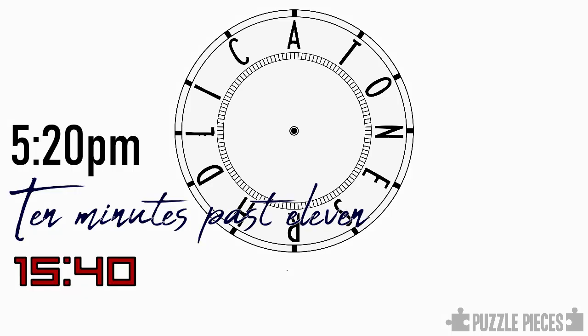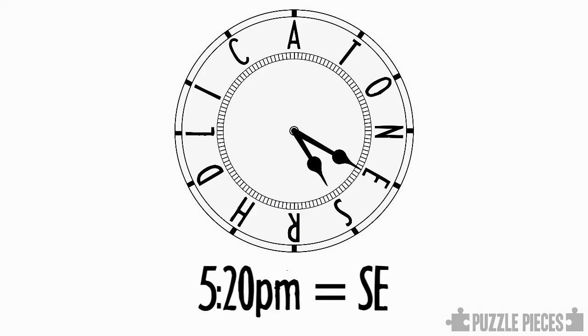Now suppose that you were given some different times to look up on this clock. You can make this puzzle more interesting by expressing those times in different formats. So the first time here is 5:20 p.m. When we set the hour hand to 5 and the minute hand to be 20 past, we get the letters S E.